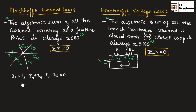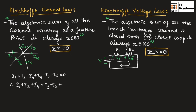Here, currents I1, I2, and I4 are moving towards the junction, which is why they are considered positive, and currents I3, I5, and I6 are moving away from the junction, which is why they are considered negative. So, the algebraic sum of currents will be equal to 0. Therefore, we can write: I1 + I2 + I4 = I3 + I5 + I6.